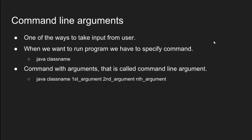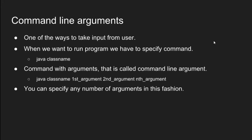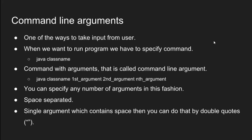We specify the command with arguments, that's why it is called command line argument. The general syntax is: java space class name space first argument space second argument space nth argument. You can specify any number of arguments in this fashion. Arguments are space separated, meaning first argument and second argument in the example are two different arguments. If you want to specify a single argument which contains a space, you can do that by enclosing the argument in double quotes.